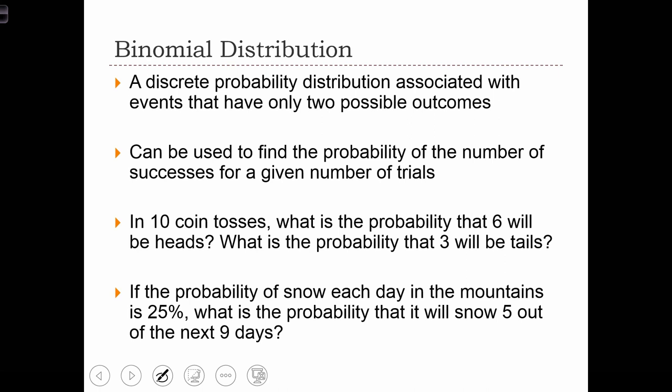The binomial distribution is a discrete probability distribution associated with events that have only two possible outcomes. It can be used to find the probability of the number of successes in a given number of trials.